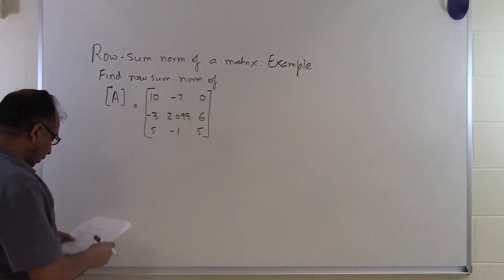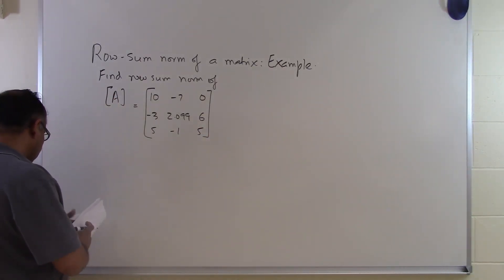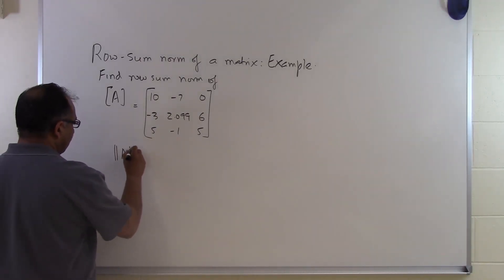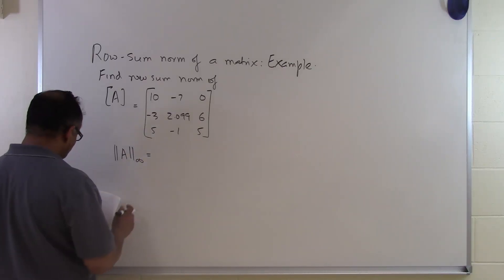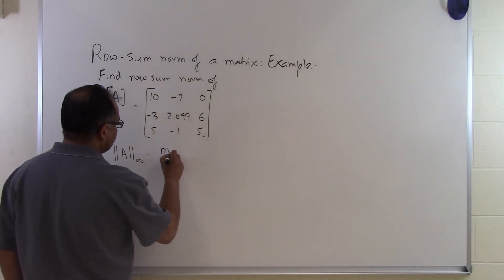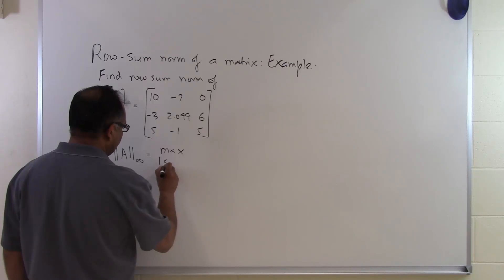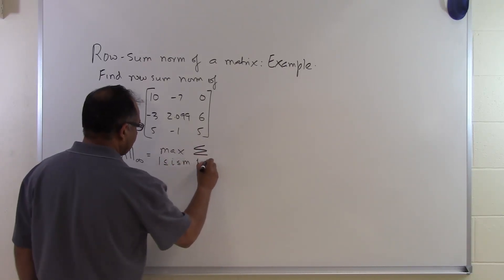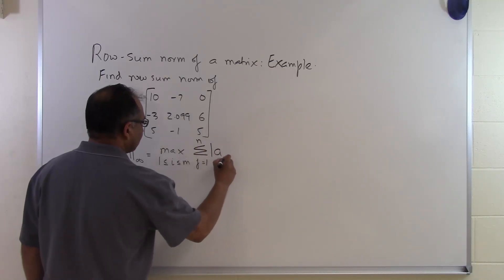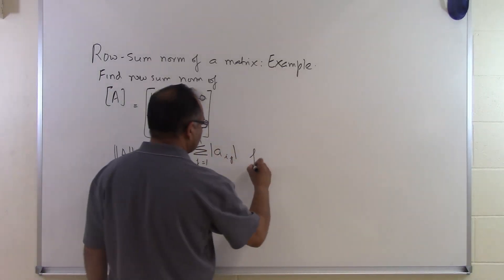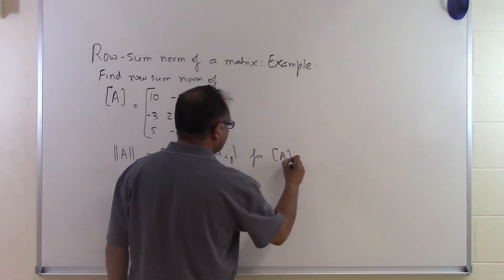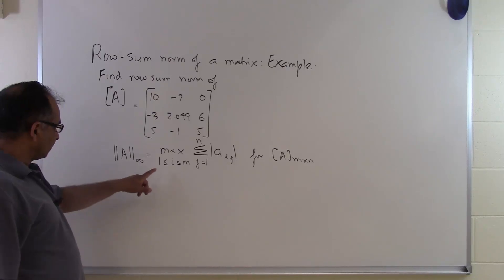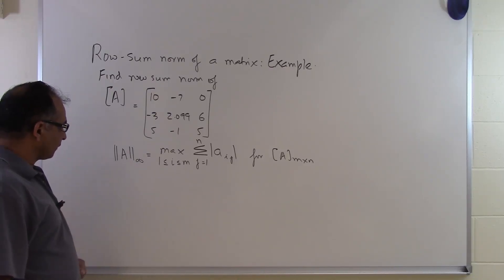We have already looked at the definition of the row sum norm: the infinity norm or the row sum norm is given by the maximum over 1 less than or equal to i less than or equal to m of the summation j equals 1 to n of the absolute value of a_ij, for a matrix which has m rows and n columns.